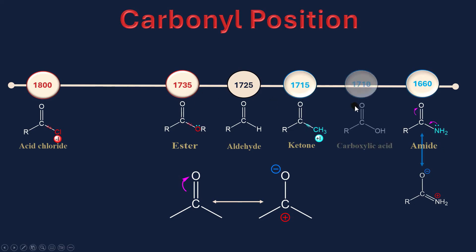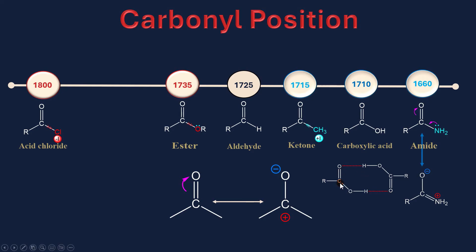But you may ask: why does carboxylic acid, which has a highly electronegative atom, have a low wavenumber? As we said previously, it's related to the presence of hydrogen bonding, which weakens the carbonyl bond.